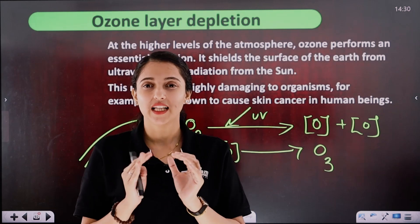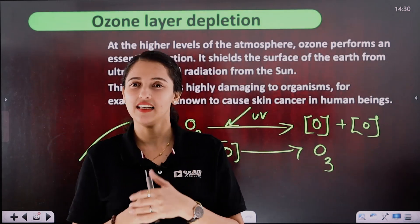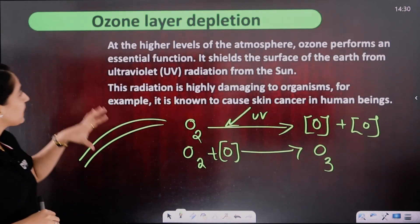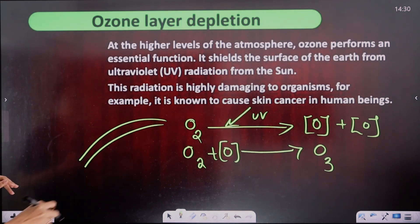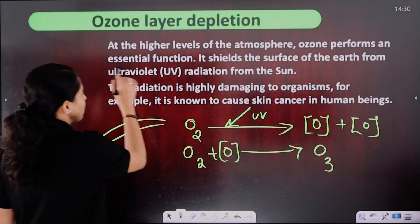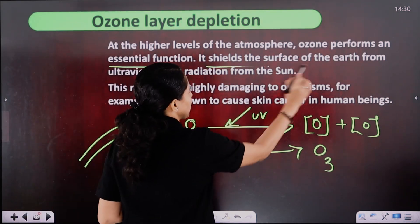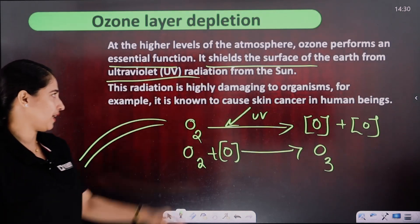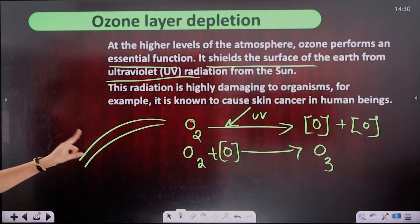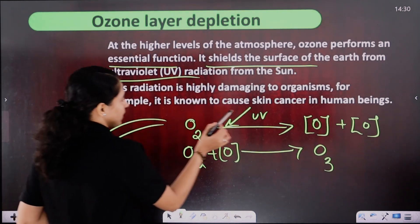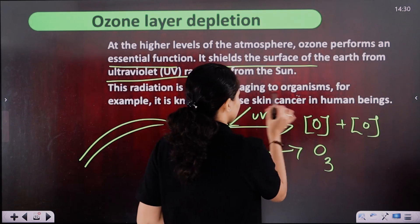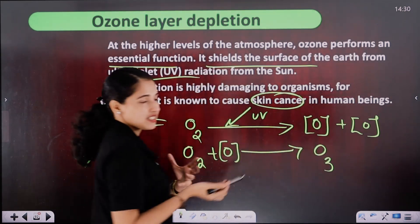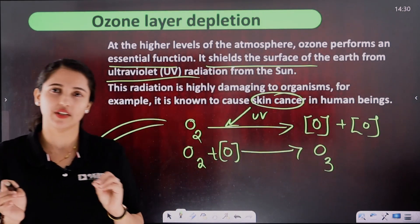When ozone is formed, it builds a thick layer in the stratosphere, and that is why it acts as a protective shield. At the higher levels of the atmosphere, ozone performs an essential function: it shields the surface of the Earth from ultraviolet radiation, which is highly damaging and causes skin cancer and eye diseases.